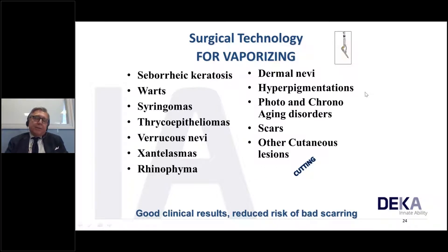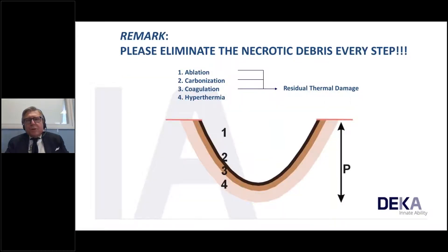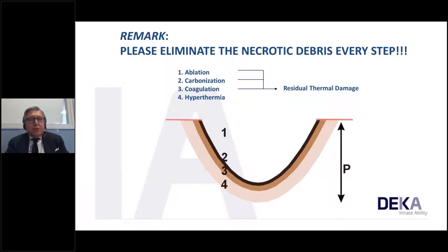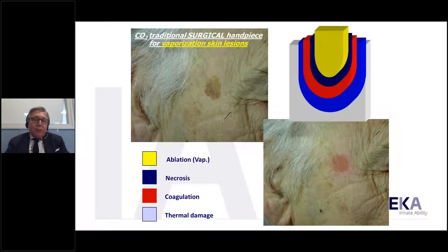A list of indications for vaporization shows reduced scarring risk with innovative protocols developed over the last decade. This important image helps us evaluate what to do during the procedure: looking at the ablation crater, carbonization, coagulation, and hyperthermia zones. It is critical to remove necrotic debris with each pass during treatment, otherwise we risk amplifying thermal diffusion in surrounding areas. Remove the necrotic debris with wet gauzes, as shown in the video.